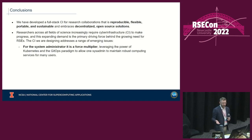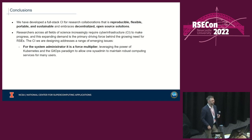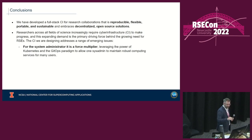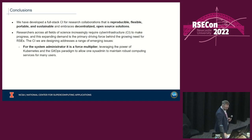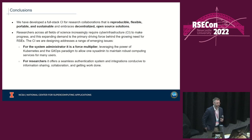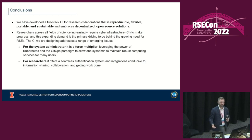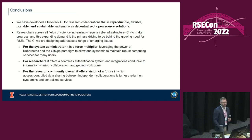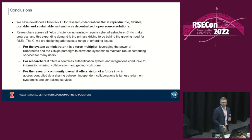The CI we're designing addresses a range of emerging issues. For the system administrator, it's a force multiplier — leveraging the power of Kubernetes and a GitOps paradigm — allowing one sysadmin to maintain robust computing services for many users. For researchers, it offers a seamless authentication system and integrations conducive to information sharing and collaboration. For the research community overall, it offers a vision where access control and data sharing between independent collaborations is far less reliant on sysadmins and centralized services.